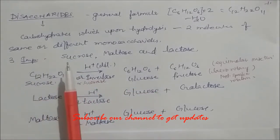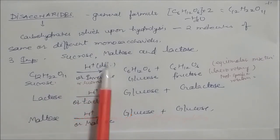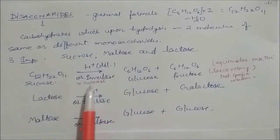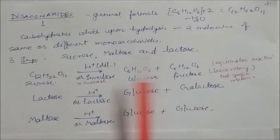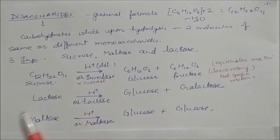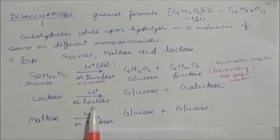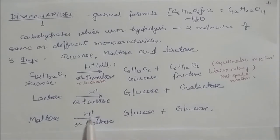Sucrose on acid hydrolysis by invertase (sucrase enzyme) gives glucose plus fructose. Lactose under acid hydrolysis or using lactase converts into glucose and galactose. Similarly, maltose under acid hydrolysis or maltase converts into glucose and glucose — two identical monosaccharides.